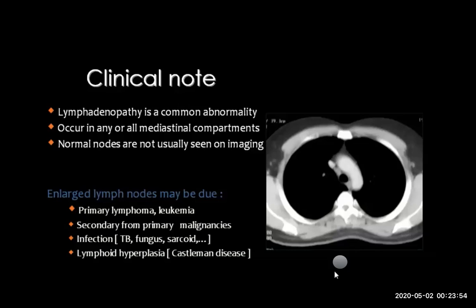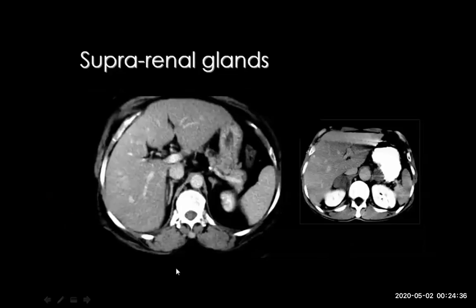Enlarged lymph nodes can be seen in primary diseases like lymphoma and leukemia, or in secondaries from primary malignancies — for example, metastasis from CA stomach, colon, CA breast. Some infections give lymphadenopathy, like TB, which may show necrotic centers similar to squamous cell carcinoma metastasis. Also, diseases like lymphoid hyperplasia and Castleman disease may show lymphadenopathy.